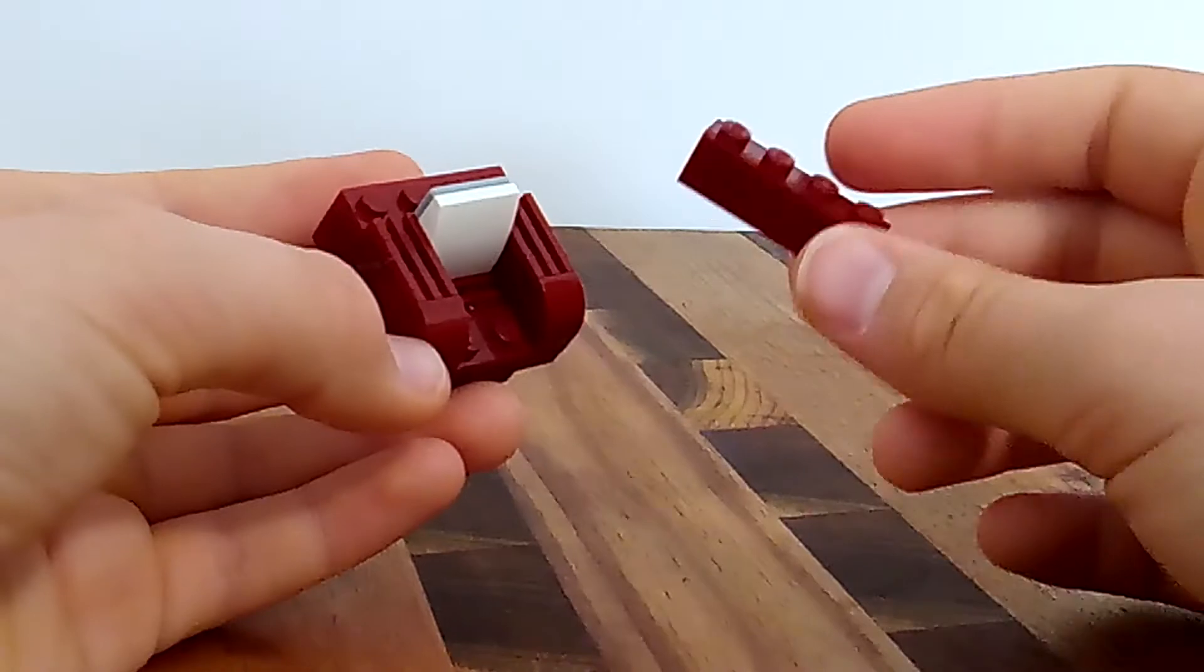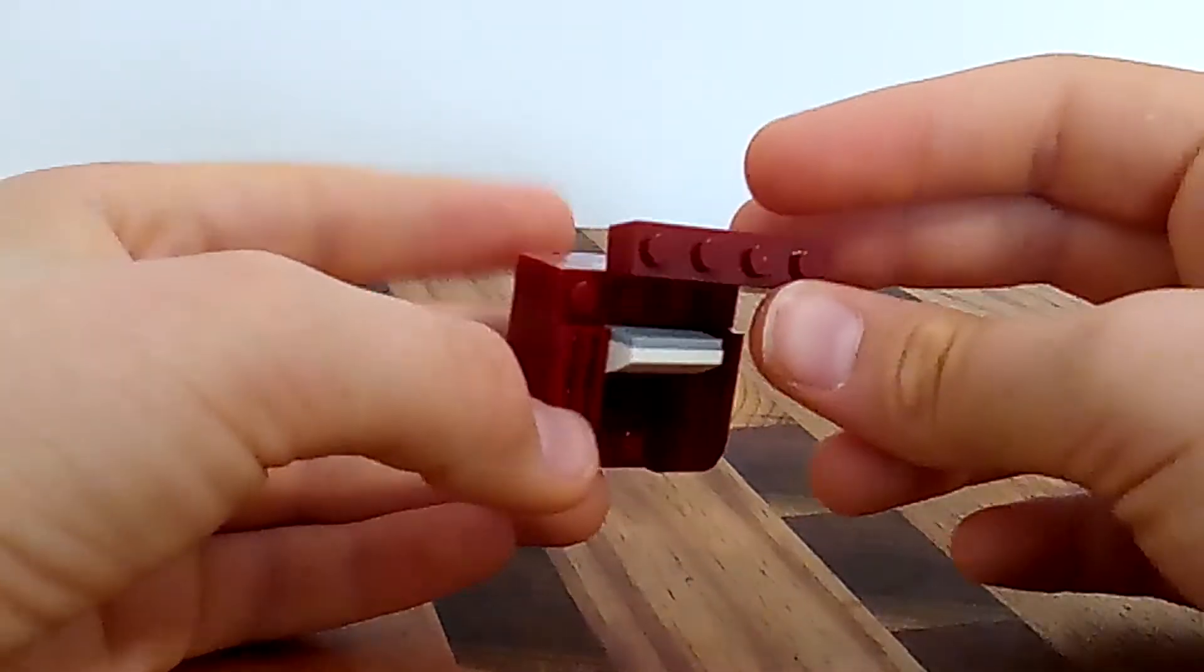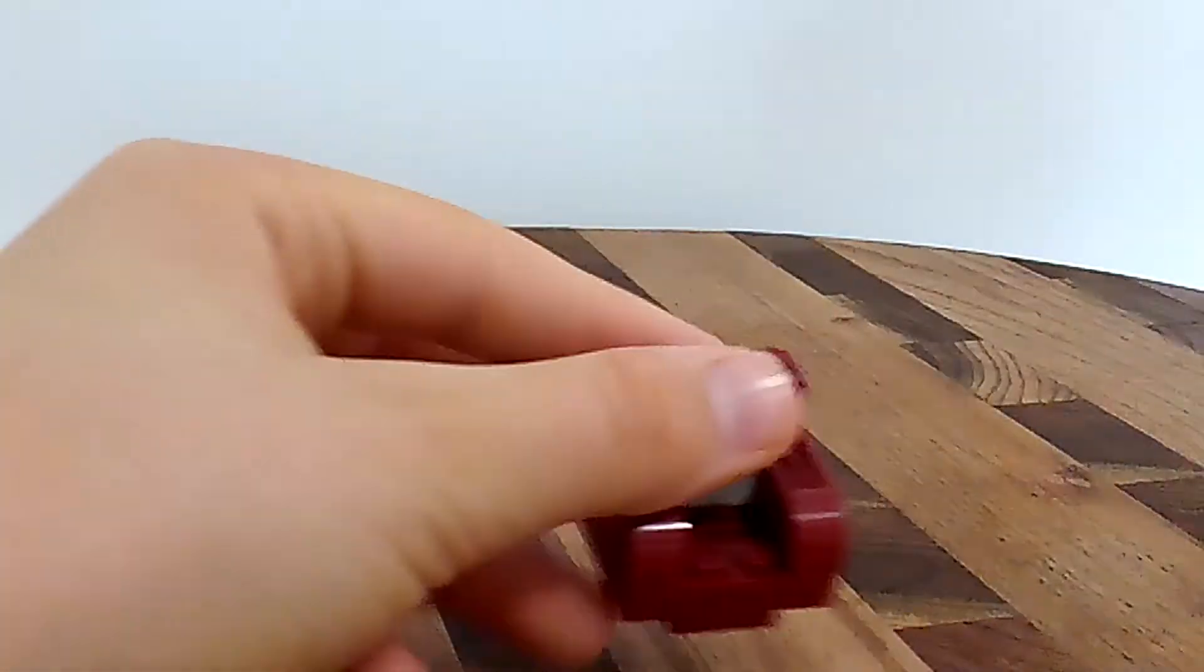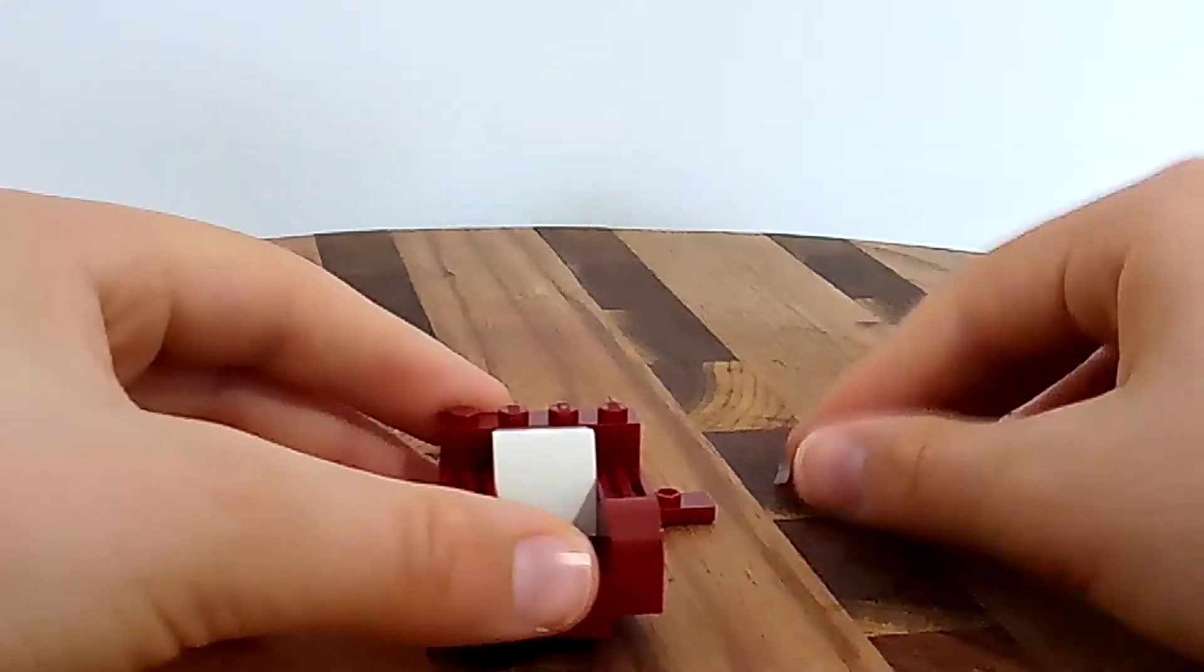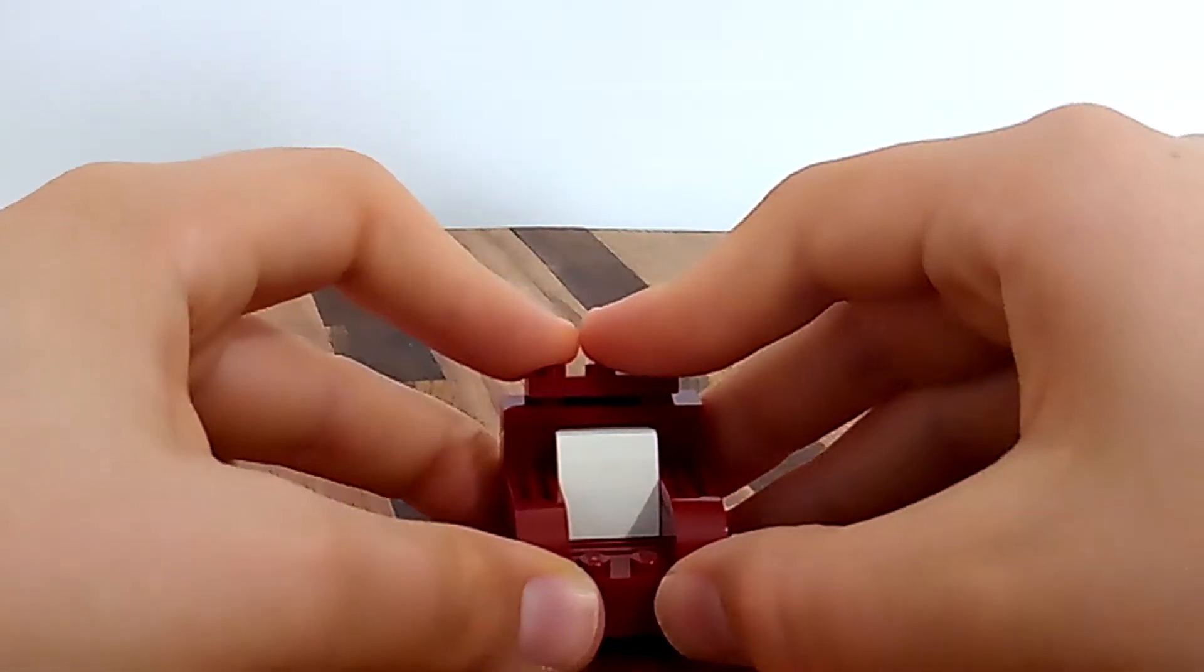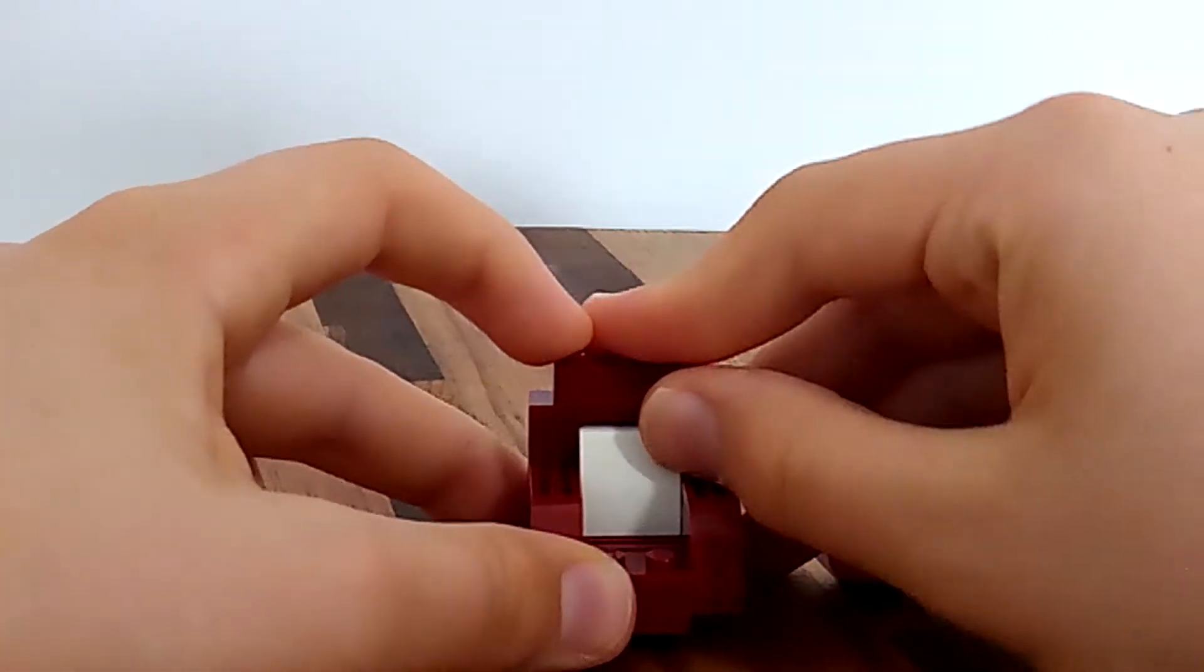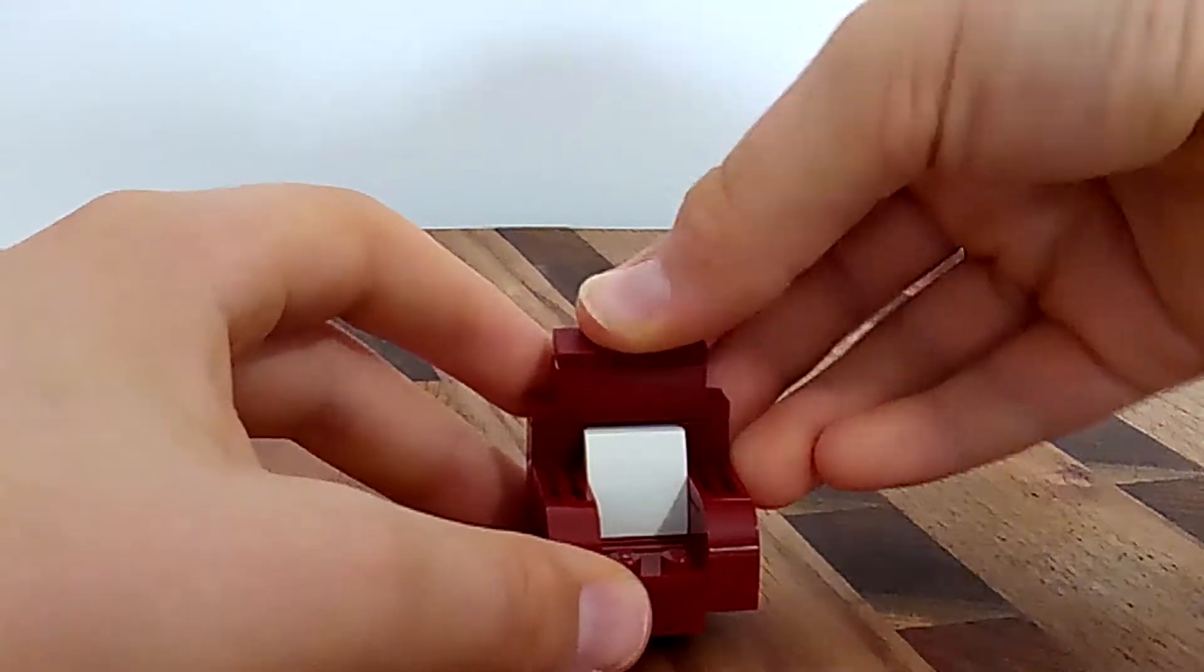Then you need a four by one brick. That just goes there. And then you take two of these jumper plates. These go there. Then you have one of those, one of those, and finally, one of those.